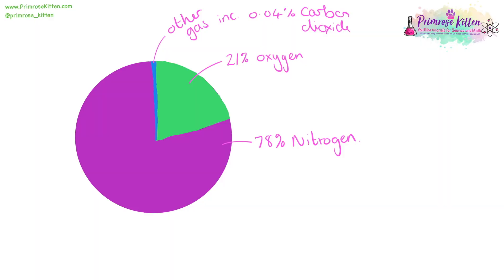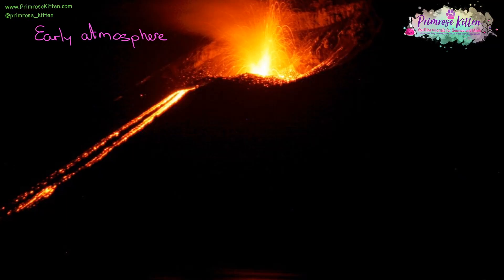The air we breathe is made up of lots of different gases, predominantly nitrogen gas with about 20-21% oxygen in there, and then lots of other gases, including a small amount of carbon dioxide. This is very different to the early atmosphere, which was mainly formed by things coming out of volcanoes.